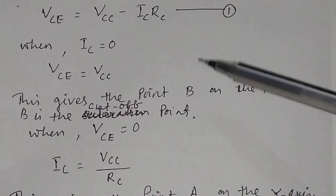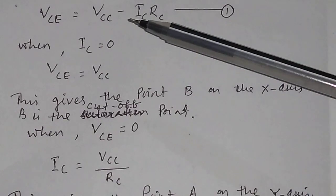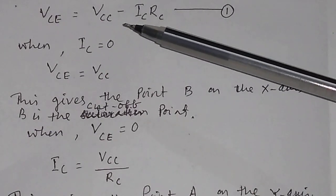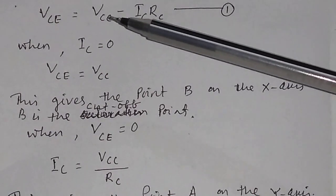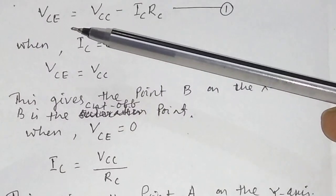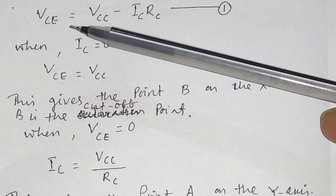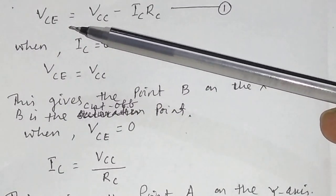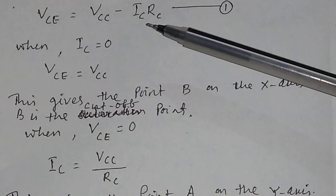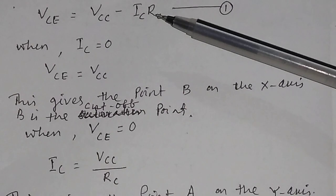Now, the total output biasing voltage VCC is equal to the voltage drop VCE across the collector-emitter junction plus the voltage drop across the load resistance RC.